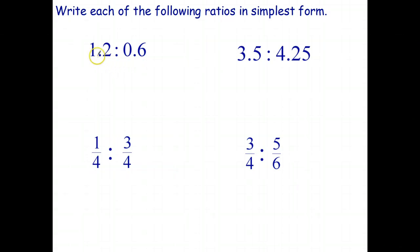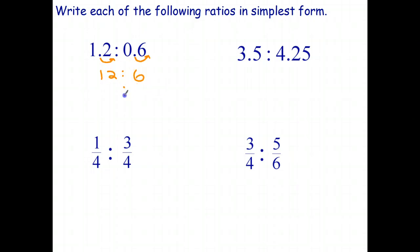Decimals are actually pretty easy to deal with — all you have to do is multiply by 10, 100, 1000, or some power of 10. In this case I'm going to multiply by 10, move the decimal point back one place, and that means the ratio can be written as 12 is to 6. Now I can simplify by dividing both sides by 6: 12 divided by 6 is 2, and 6 divided by 6 is 1.